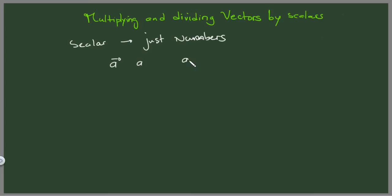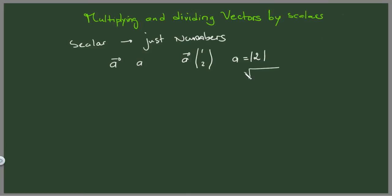For example, you can have a vector A with a value of (1, 2), and a scalar a with a value of 2. That scalar is a magnitude — it uses the absolute value as we said before. This is just an example; it's not the magnitude of this vector, because the magnitude of this vector is actually the square root of (1² + 2²), which is the square root of 5.